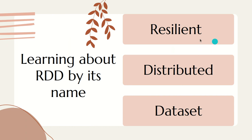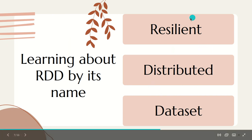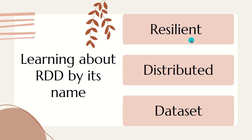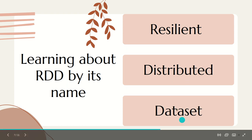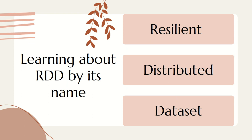RDD has three keywords: Resilient, Distributed, and Dataset. Resilient means fault tolerant. Distributed means things got distributed across multiple nodes. Dataset means a collection of partitioned data. The data can be of formats like JSON, TXT, CSV, Parquet, and others.